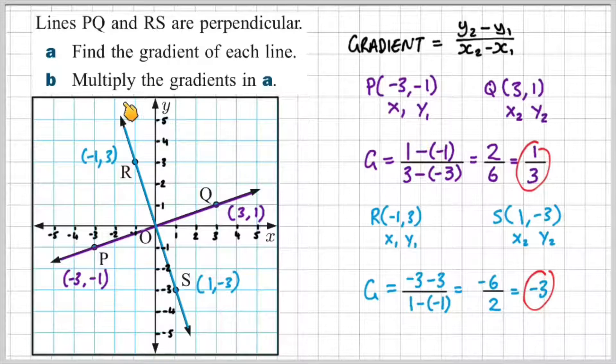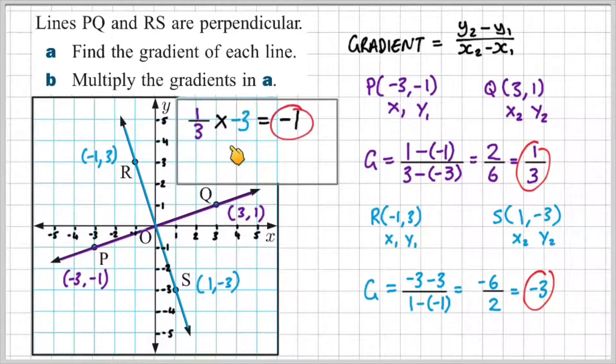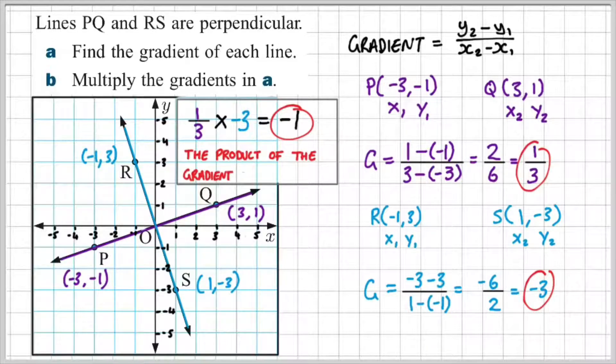Now part B says multiply the gradients in A. So we're going to multiply these two gradients. So let's make a bit of space here. And we can do one third times minus three, which gives us minus one. And therefore we can conclude that the product of the gradients of perpendicular lines is equal to negative one.